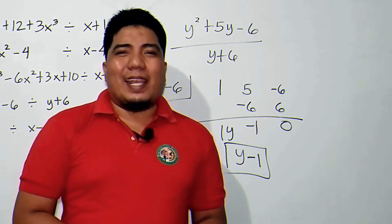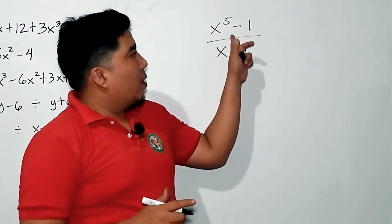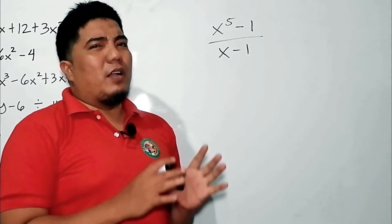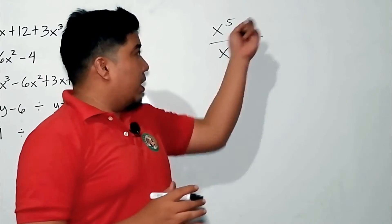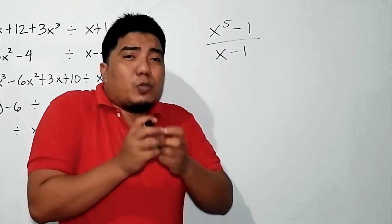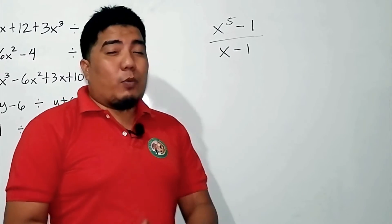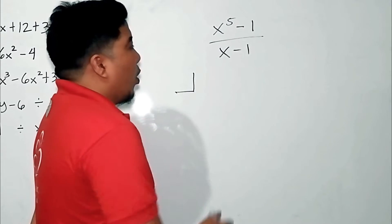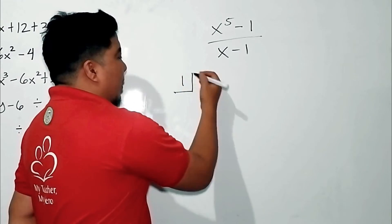For our final example, we have x⁵ - 1 divided by x - 1. Most students are confused here and just cancel them — but that is wrong. What you need to do is consider all the terms, including those not available, especially when using synthetic division. First, we use the divisor: transposing -1 gives us positive 1.